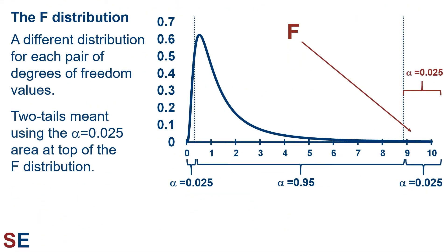Let's review the F-test. There was a different distribution for each pair of degrees of freedom values. Since there were two tails for our test — because either variance could be larger — the two tails meant using the alpha equals 0.025 area at the top of the F-distribution. We calculated an F-value and compared it to the F-values on the x-axis of the probability distribution to see if our calculated value was in the top two and a half percent. If that happened, we knew the overall p-value was less than 5% and we could reject the null hypothesis. If not, we would fail to reject the null hypothesis and could not conclude that either variance was larger than the other.